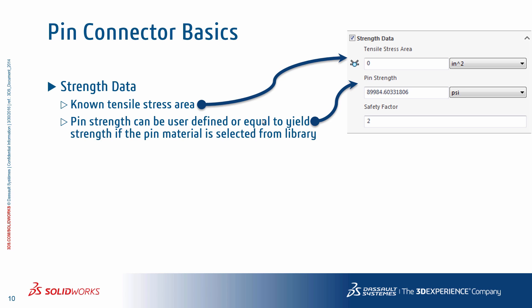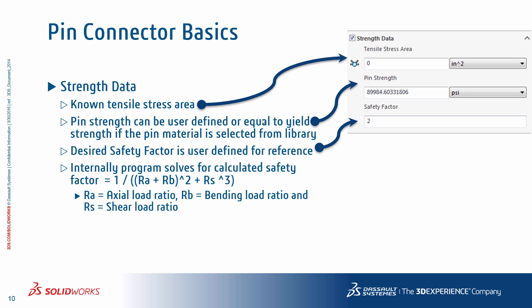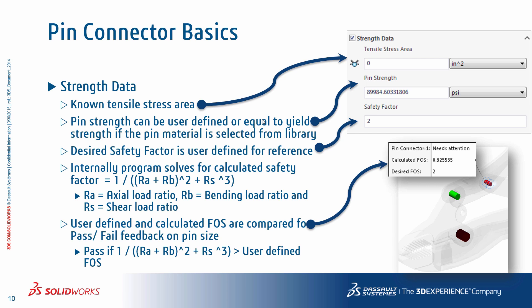The strength data option helps to determine if the pin can safely carry the applied loads or if it is going to fail. You can input a known tensile stress area of the pin, and the pin strength can be user defined or set equal to yield strength if the pin material is selected from the material library. This is used for safety factor calculations. You can also input a desired factor of safety. The program calculates the axial, bending, and shear loads during analysis, then computes the axial load ratio, bending load ratio, and shear load ratio to ultimately calculate the factor of safety. The calculated factor of safety is compared to the desired factor of safety to determine if the pin passes or fails. The pin check plot is available as part of the simulation results, providing great visual feedback for rapid design decisions.